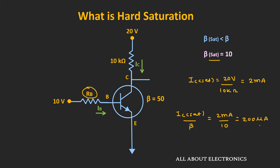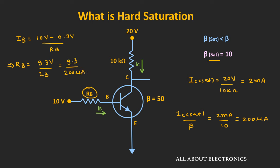This value of the base current will ensure that the transistor operates in the hard saturation. The base current Ib can be given as (10V − 0.7V) divided by Rb. Or we can say that Rb is equal to 9.3V divided by Ib. And assuming the value of Ib as 200μA, the value of Rb should be equal to 9.3V divided by 200μA. That means the value of Rb should be equal to 46.5kΩ. For the given circuit, if the value of Rb is set around this value, then we can ensure that the transistor is operating in the hard saturation.